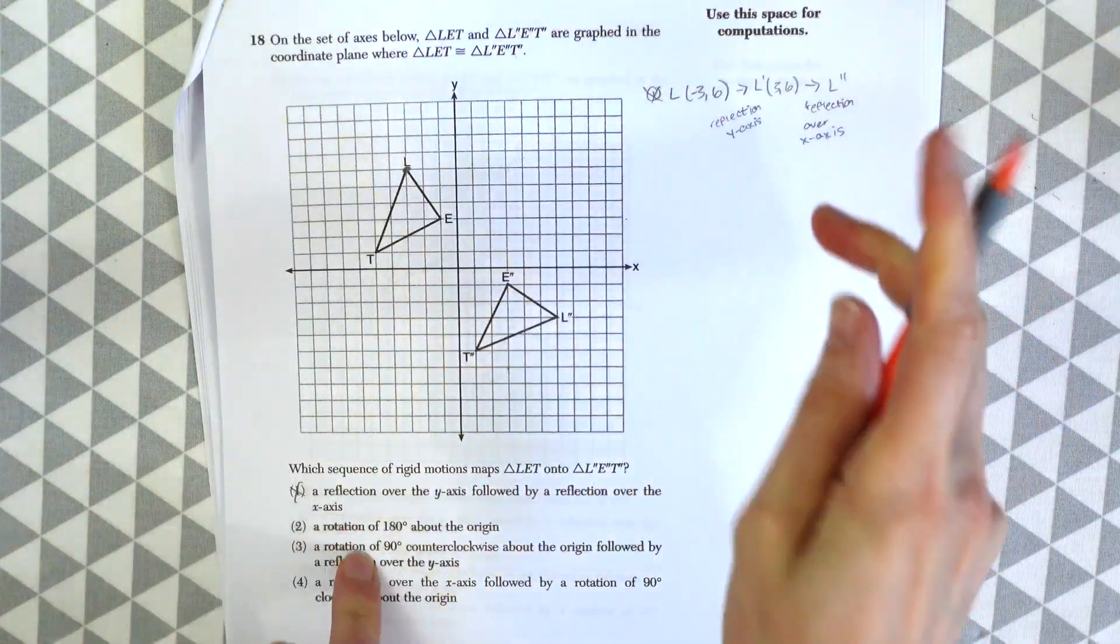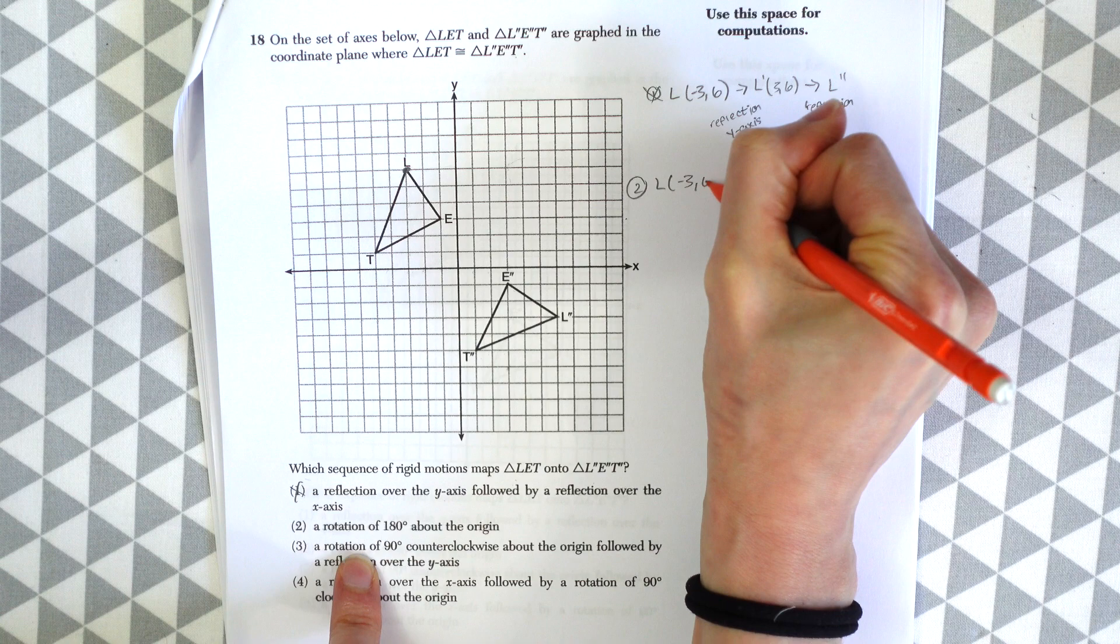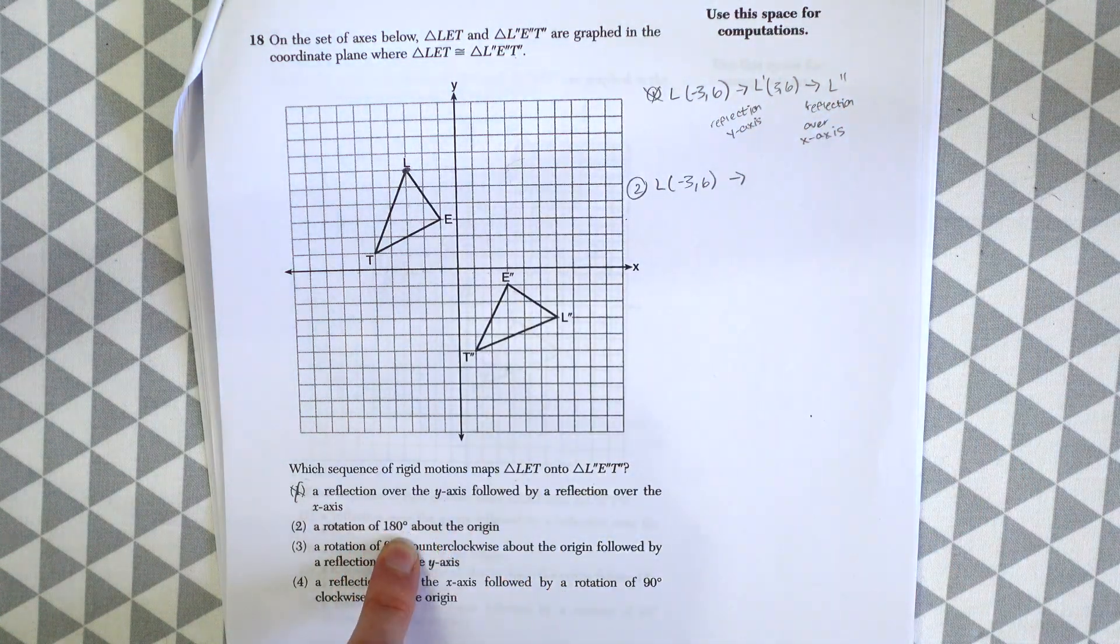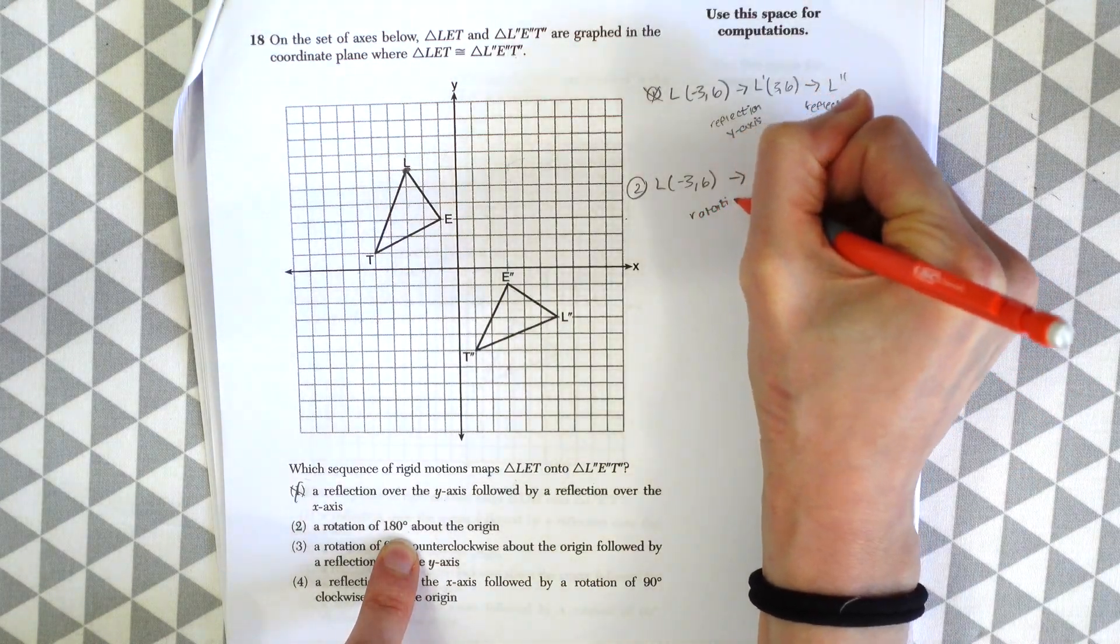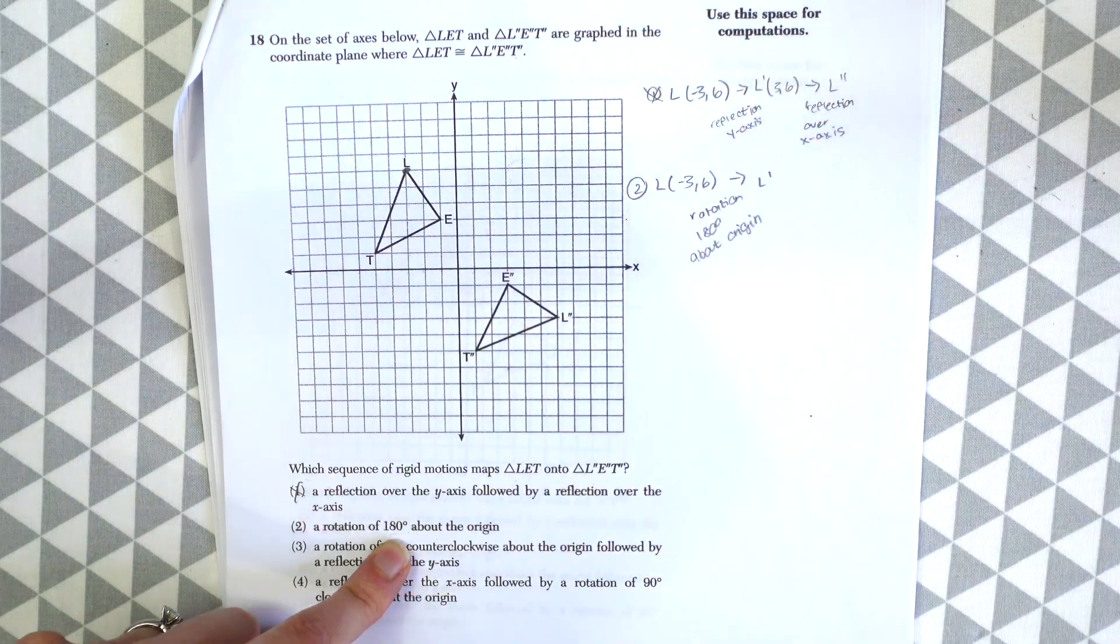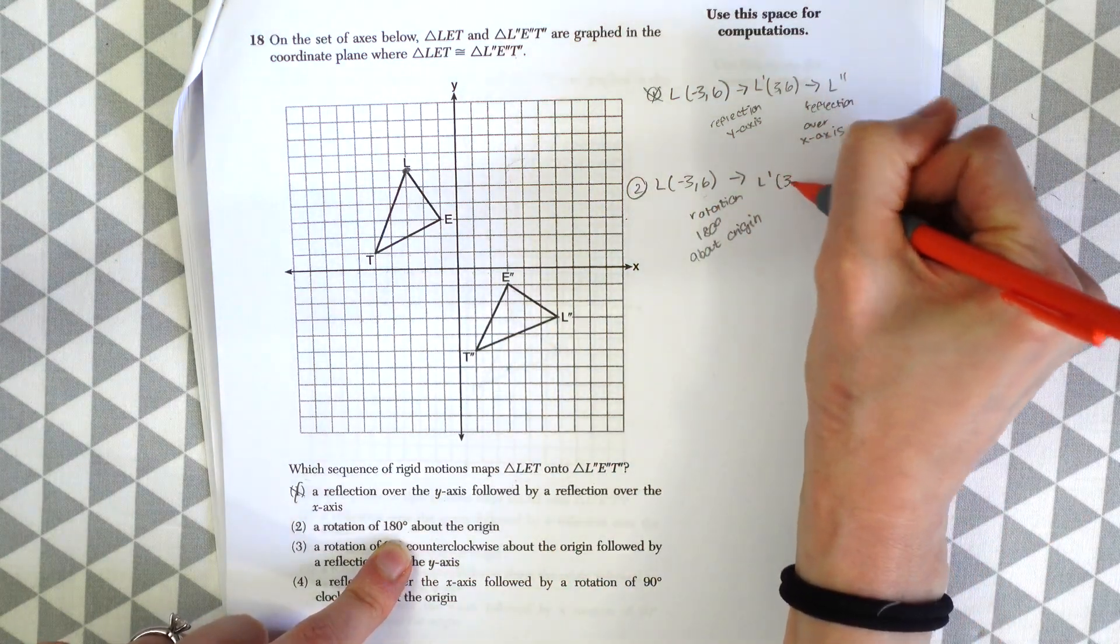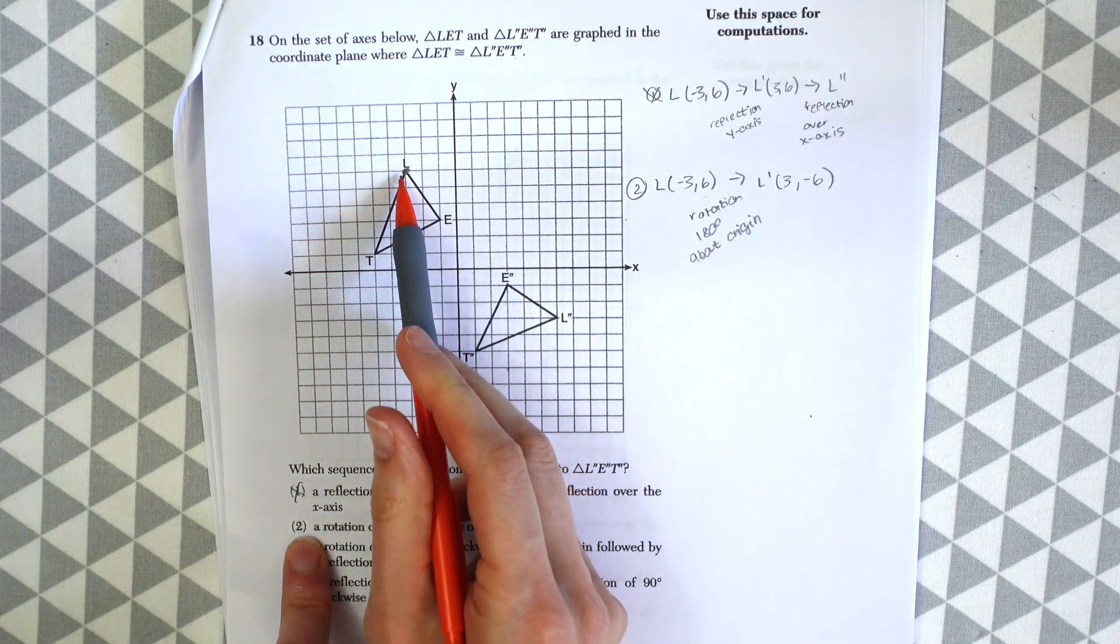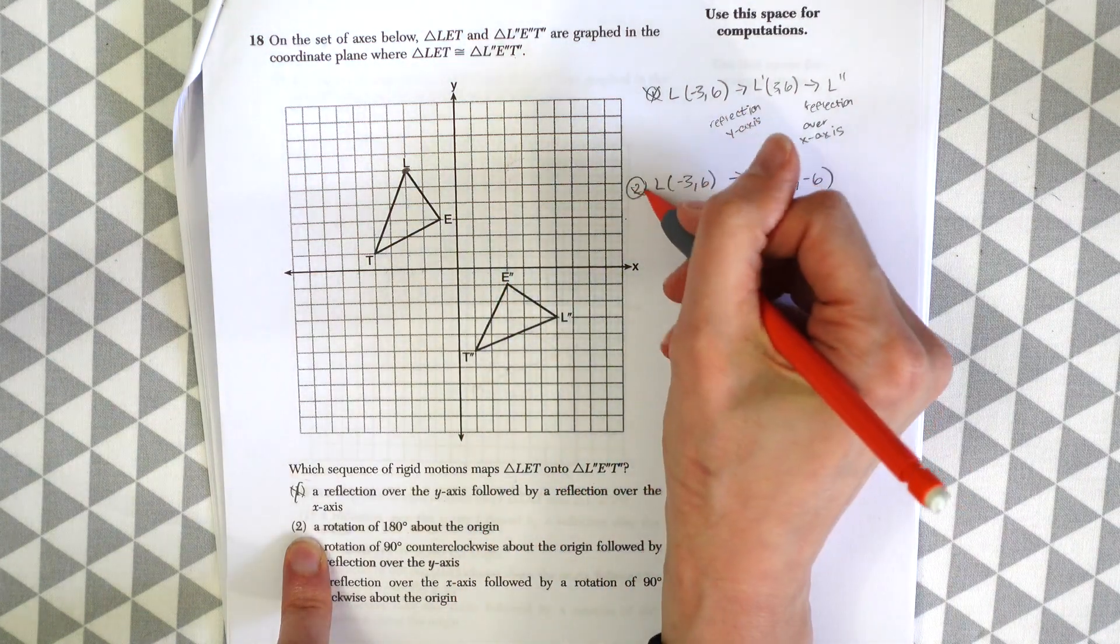So let's try the next one. Choice two. So we'll start again with L, which has the value negative 3, 6. And then a rotation of 180 degrees about the origin. So just a little reminder about the rules for that. So rotation 180 degrees. So what we're going to do here is you just negate both the x and y coordinates. So negative 3 becomes a 3, and then 6 becomes a negative 6. So let's see, does that make sense? From L to 3, negative 6? No. So that's not the answer.